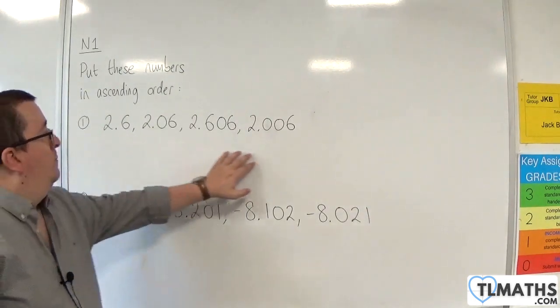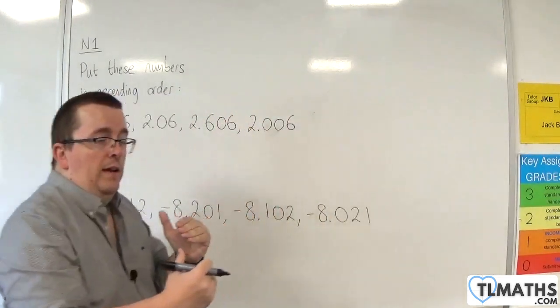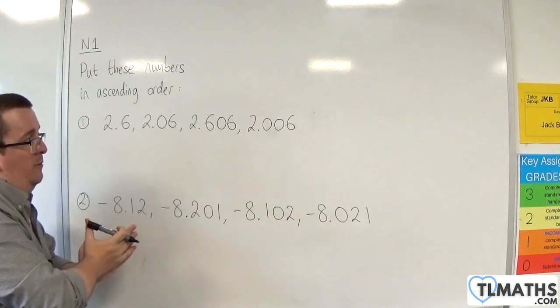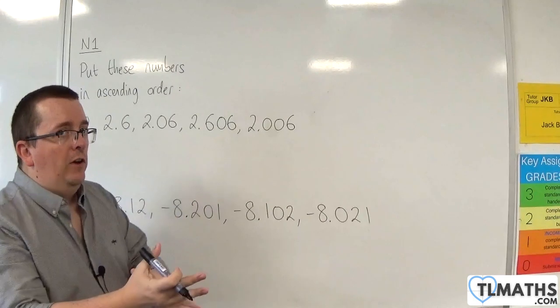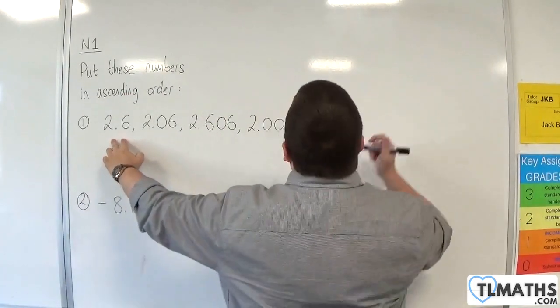Now, to help me, I'm going to write these numbers one underneath the other, and I'm going to make sure that the decimal points line up, the units column lines up, the tenths column lines up, the hundredths column lines up, and the thousandths column lines up.